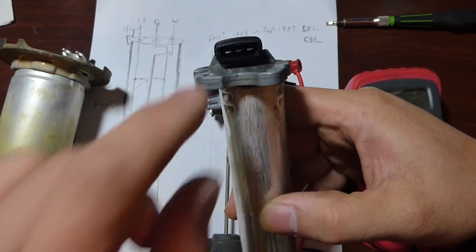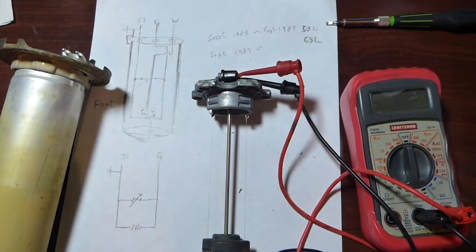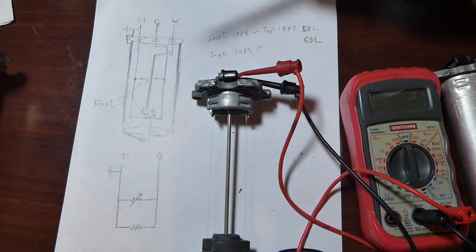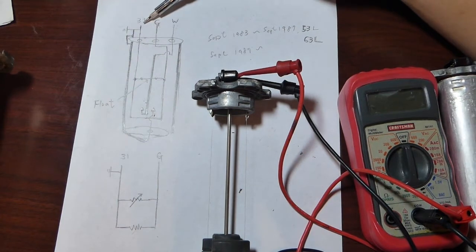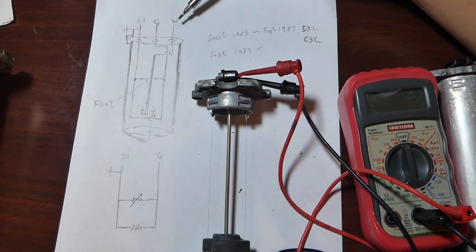On top of that, you can see there are three terminals. They correspond to terminal 31, terminal G, and terminal W.